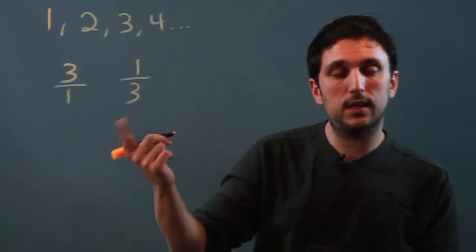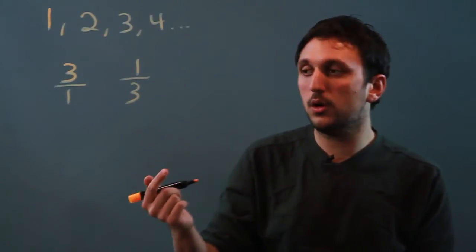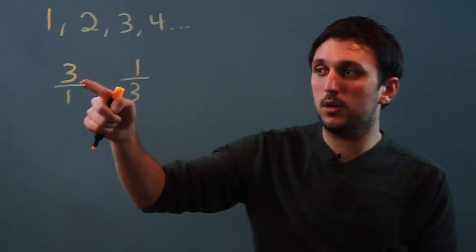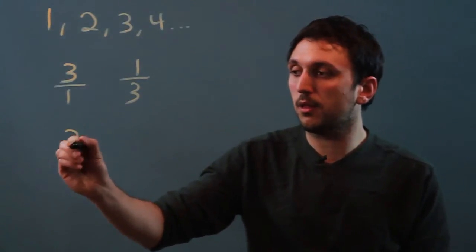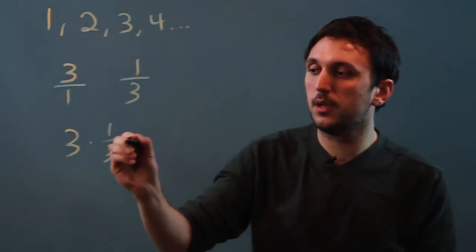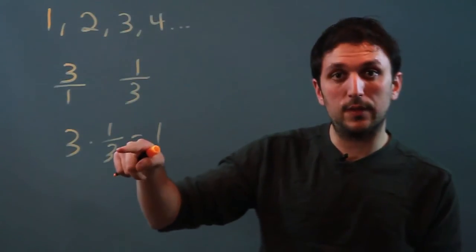And one thing that you can remember about any reciprocal is if the number times its reciprocal equals one, then you've done it right, meaning three times one-third equals one. So you've found the correct reciprocal.